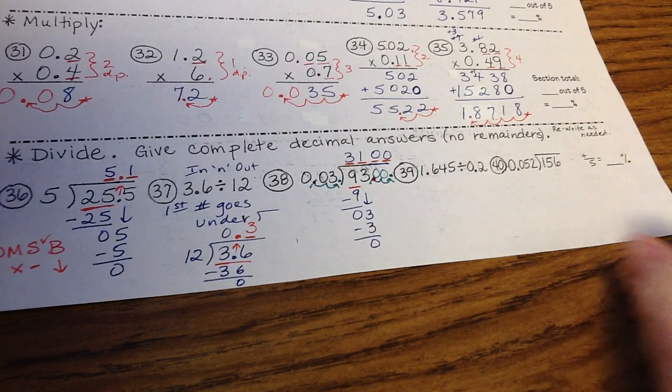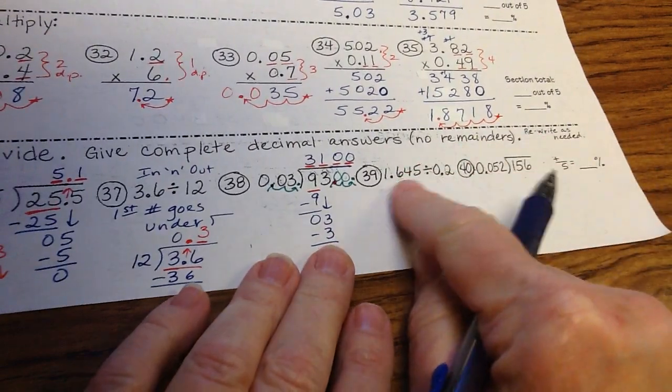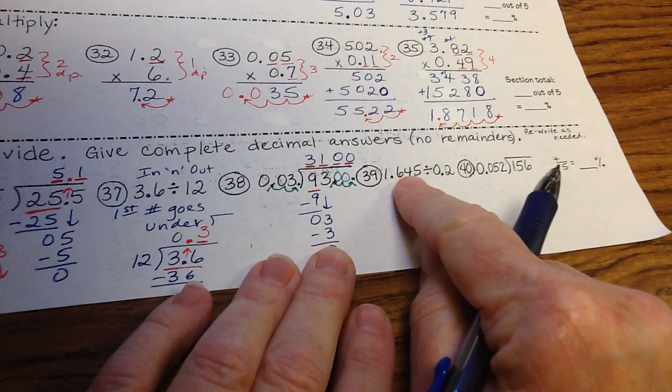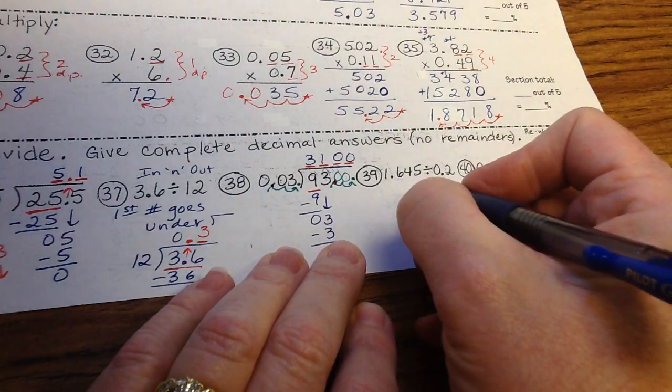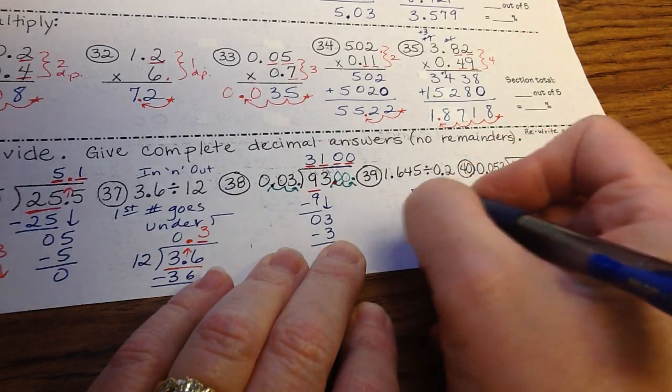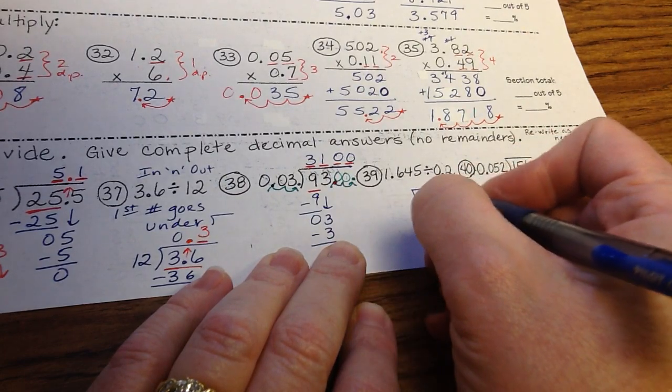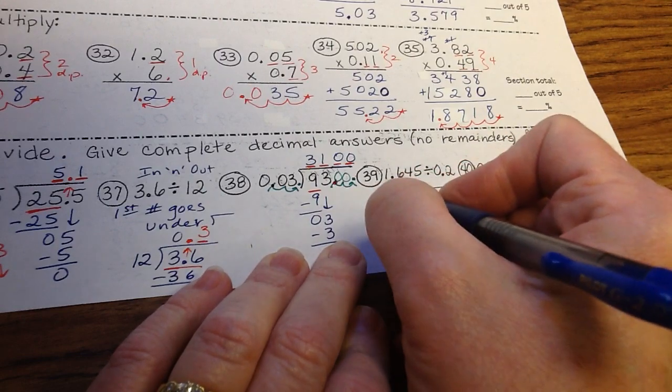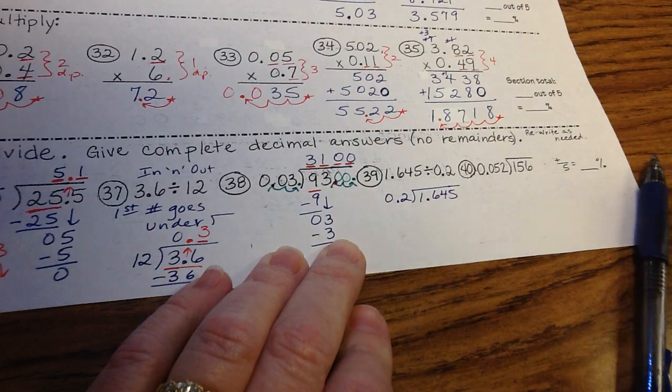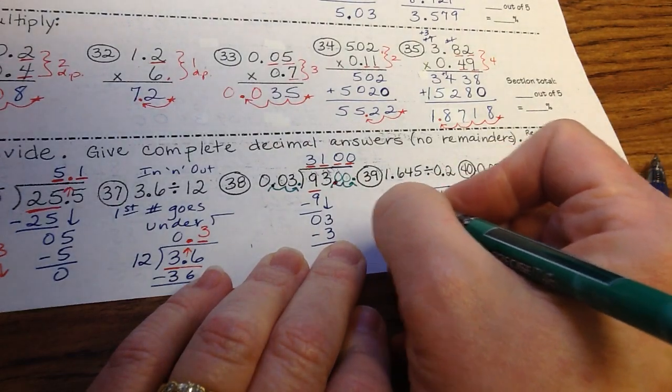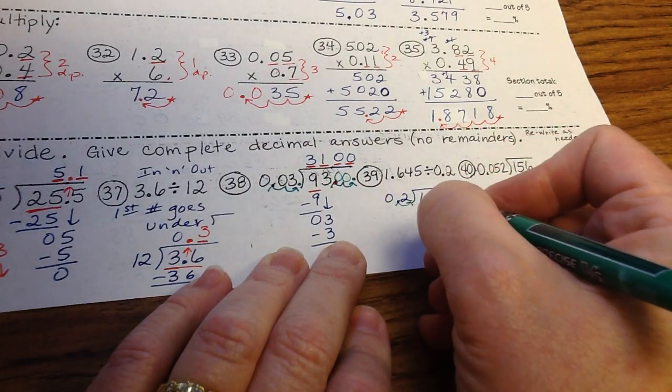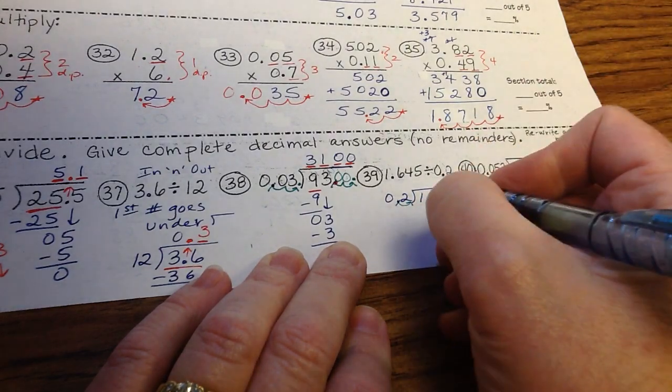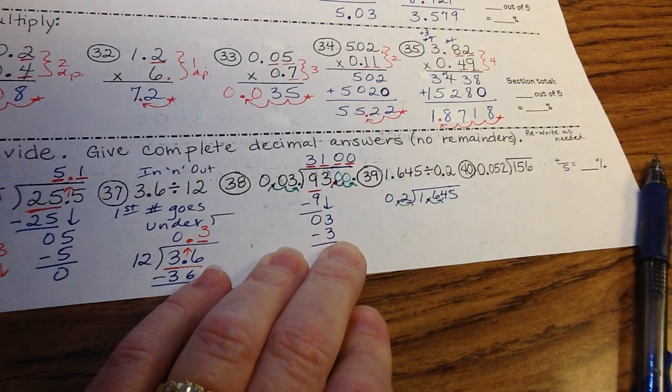Okay, number 39. Again, you're thinking, which one goes on the inside? So you can think in and out. Or you can think, first number goes under. Pretend like it's a race, and somehow or other, this is the cool space to be. And so whoever ran there first gets to be there. Now, this is not a whole number, so you're going to move it one time to make it into a whole number. So you're going to move this one one time to make it into a whole number. And then it goes straight up. It's kind of crowded. Let me try that again.